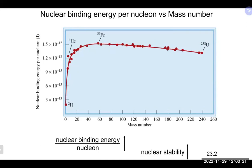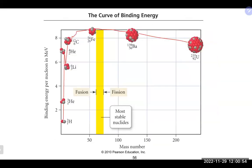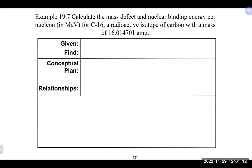Looking at the graph of nuclear binding energy per nucleon, iron-56 is at the top — it's the most stable nucleus. Anything below that on the graph is less stable. The lower the binding energy per nucleon, the less stable. The most stable nuclei fall in the iron-56 area; outside of that, nuclei undergo fission or fusion to try to get to that region.